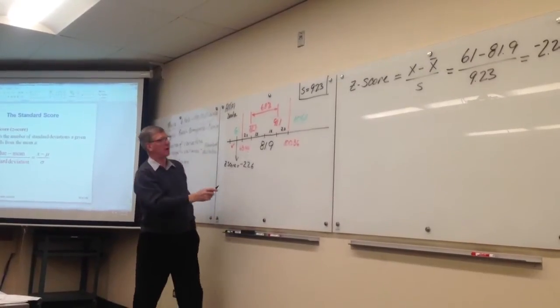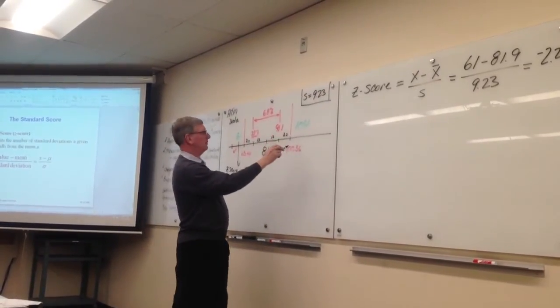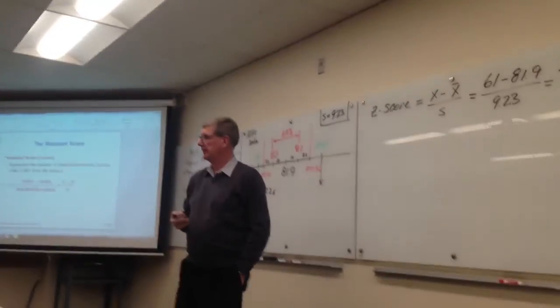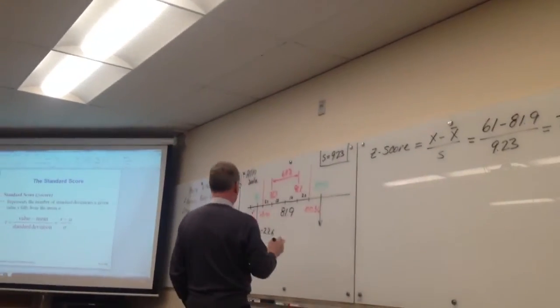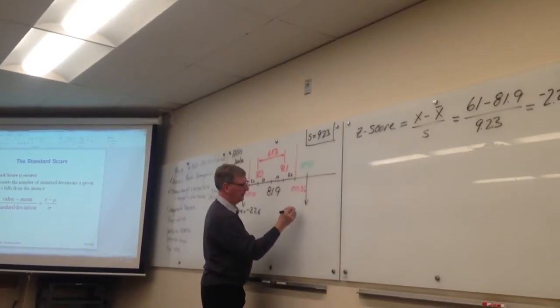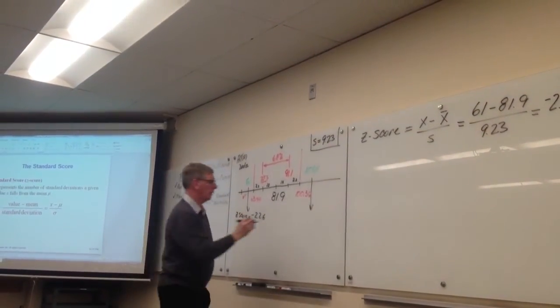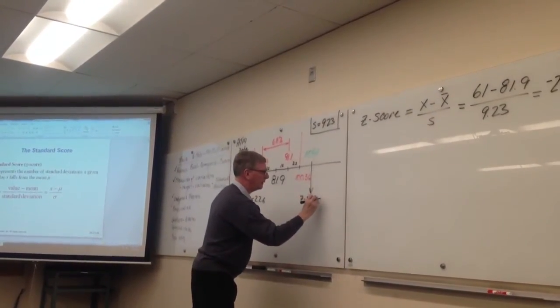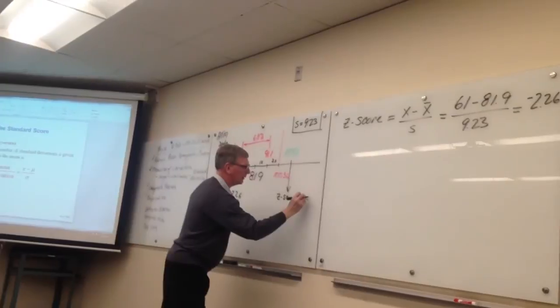Can somebody tell me the z-score for 104? What's the z-score for 104? Is it an outlier? No, it doesn't look like it. What's the z-score? 2.4. Okay, z-score equals 2.4.